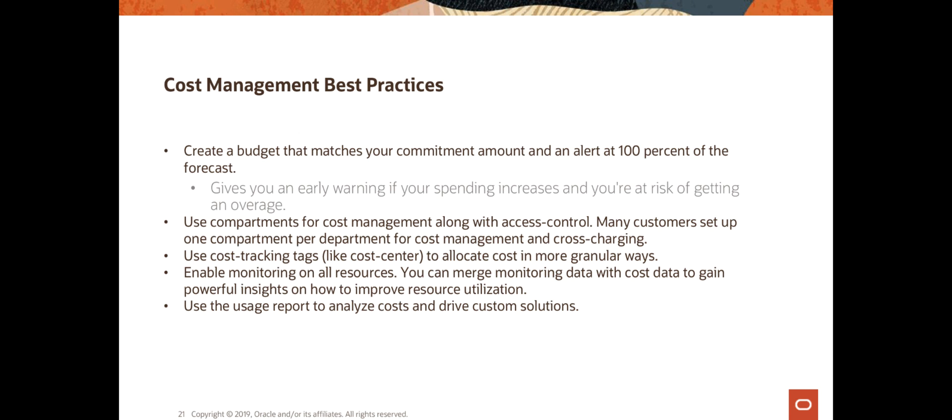So with that, let's wrap up and summarize. The cost management best practices essentially cover everything we discussed in part one and part two of this topic — these are good practices that you should follow for effective cost management in OCI. For example, you can use the cost analysis tools to filter the data you are interested in and look at trends over time or with cost tracking tags. You should create budgets that match your commitment and set up budget alerts so that you get an early warning if your spending increases and you are at risk of an overage, so you can receive emails about that.